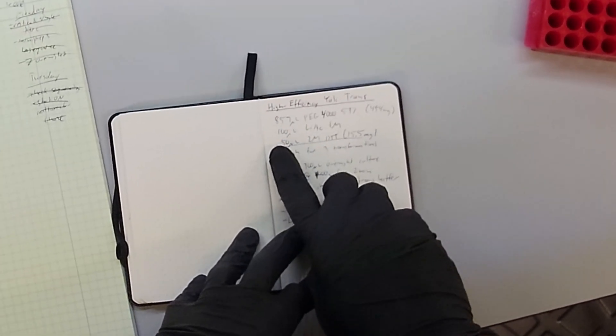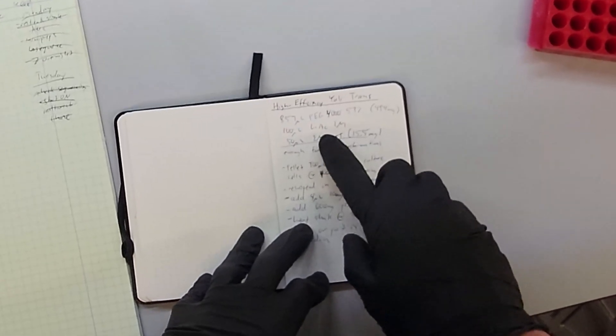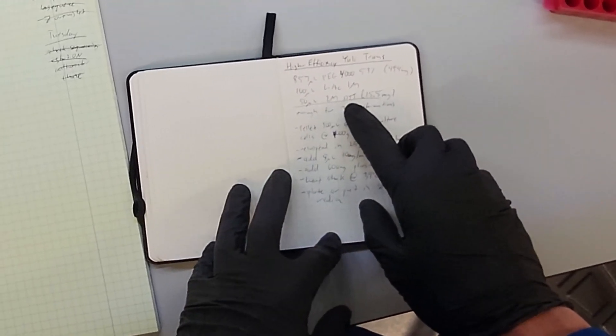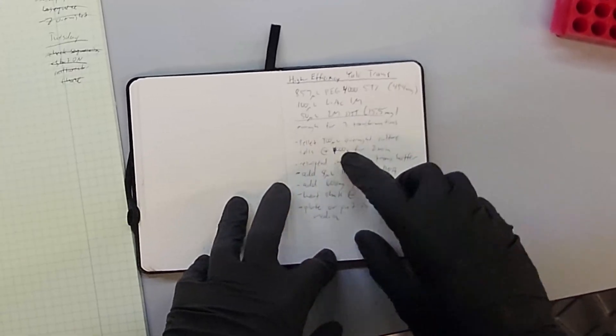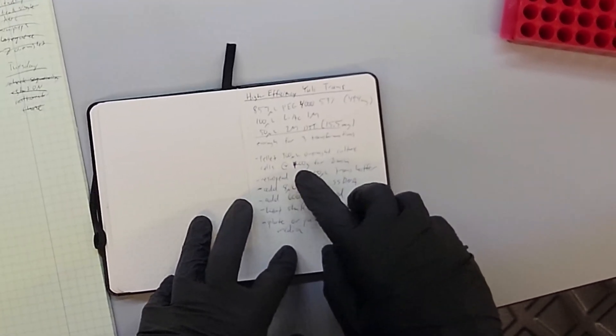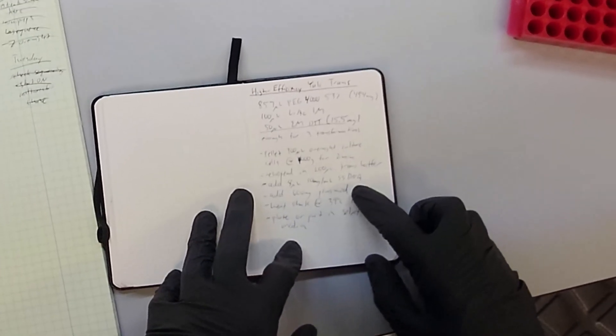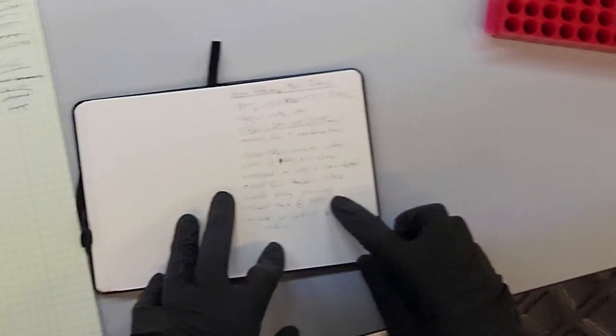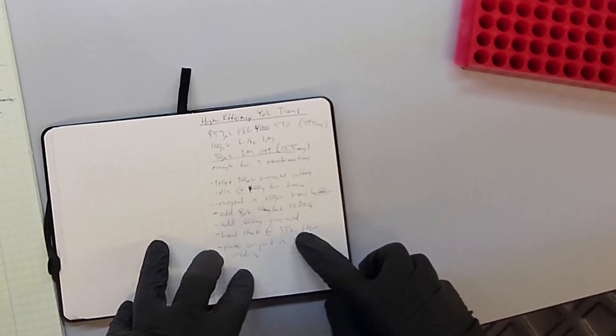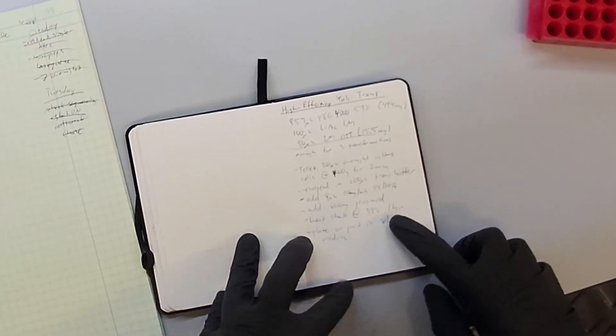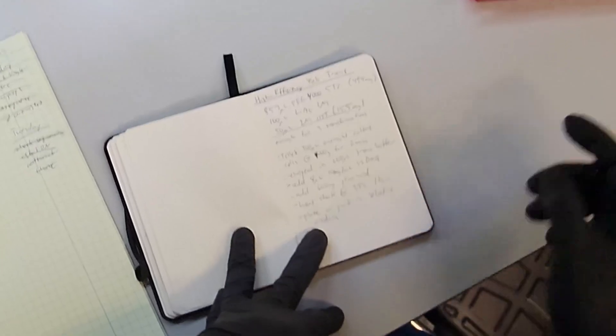Basically we make this transformation buffer with PEG-4000, lithium acetate, and DTT, dithiothreitol. We collect some cells that we grew overnight, resuspend in the transformation buffer, add SS-DNA, add the plasmid that we want, and then heat shock the cells at 39 Celsius for one hour. Wash the cells and then put them in the selective condition that should maintain the plasmid.